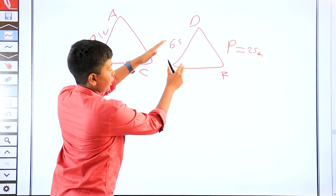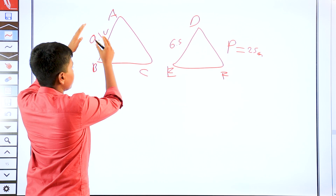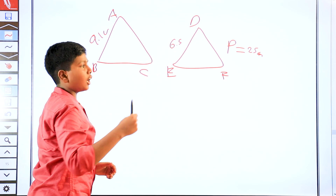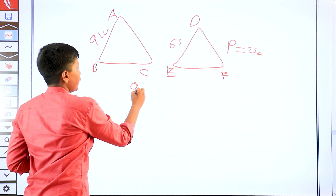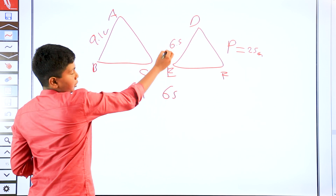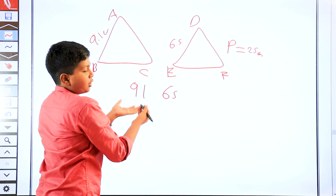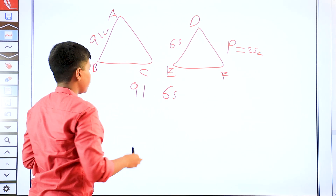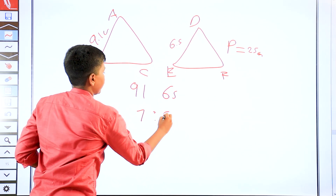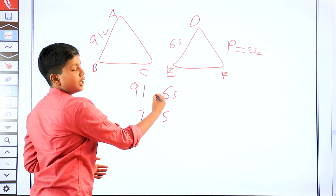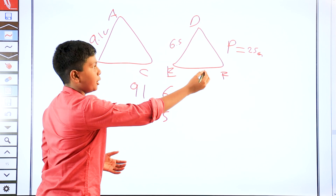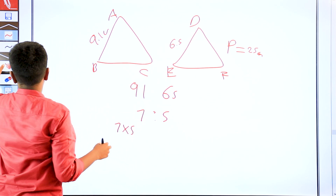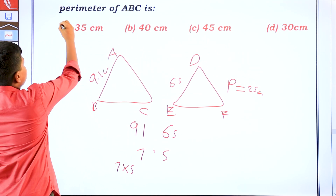The ratio of the two perimeters equals the ratio of the corresponding sides, which is 9.1 to 6.5. Simplifying, this gives a ratio of 7 to 5. Since the perimeter of DEF is 25, the perimeter of ABC equals 7 by 5 into 25, which gives 35.